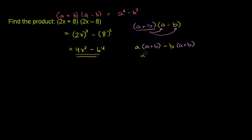a times a is a squared. a times b is ab. Negative b times a is negative ab, or negative ba. Same thing. Negative b times b is negative b squared. And then you see you have a positive ab and a negative ab. They cancel out. And you're left with a squared minus b squared.